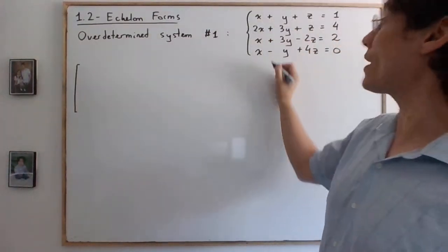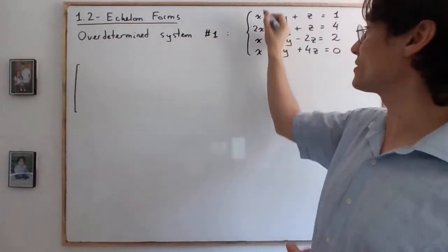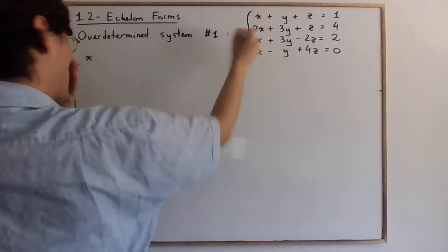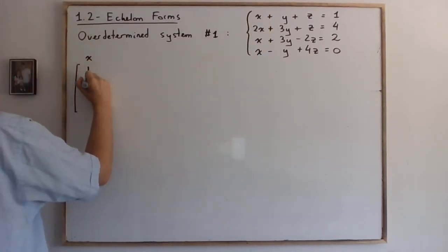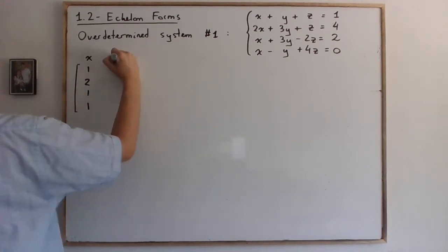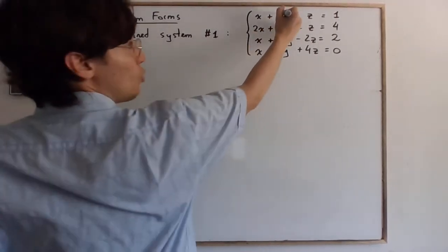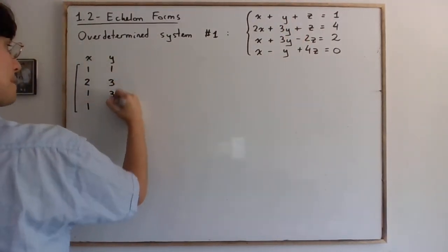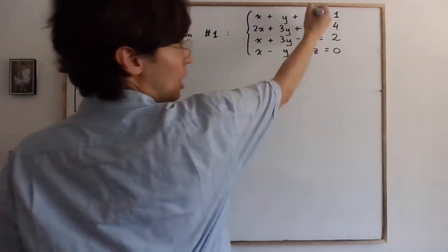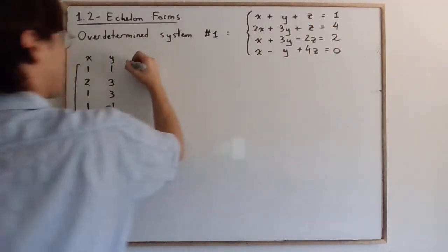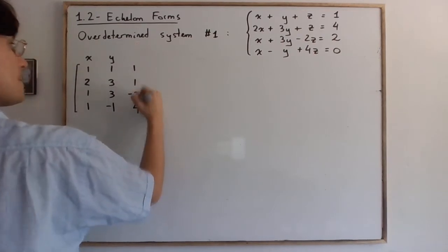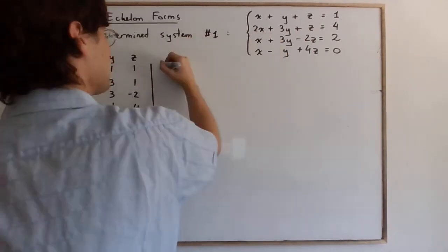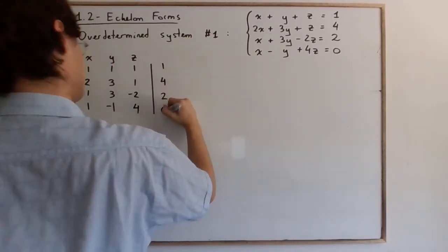By now it should be quite familiar. This is the column for x, and you just put all the coefficients. If you don't see the coefficient, it's just one, so one, two, one, one. The column for y is one, three, three, negative one. The column for z is one, one, negative two, four. And then finally the constants: one, four, two, zero.